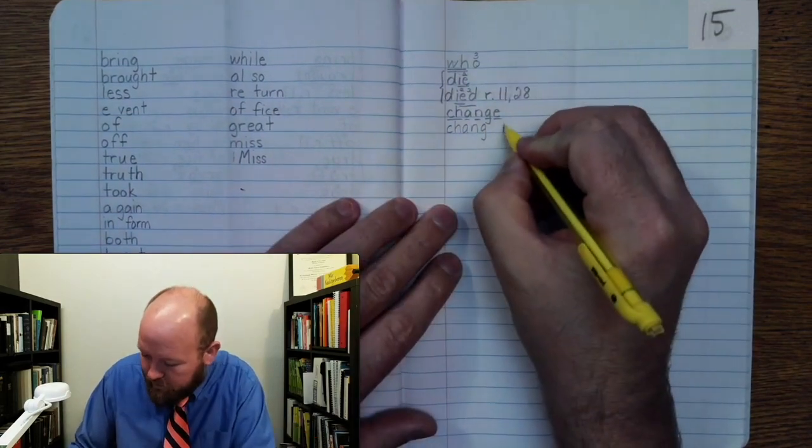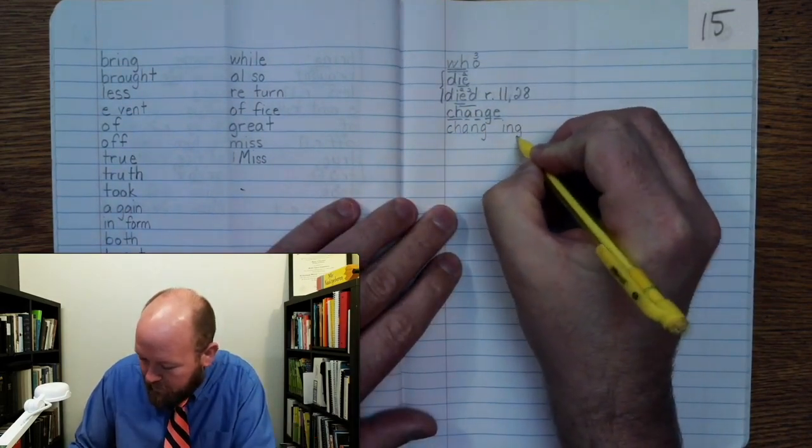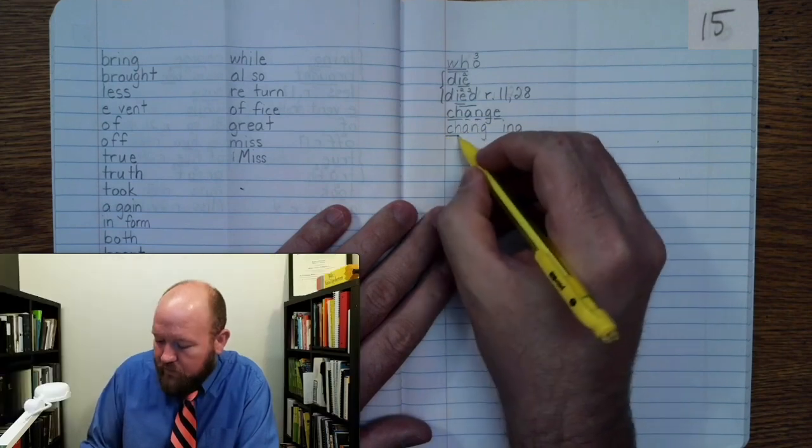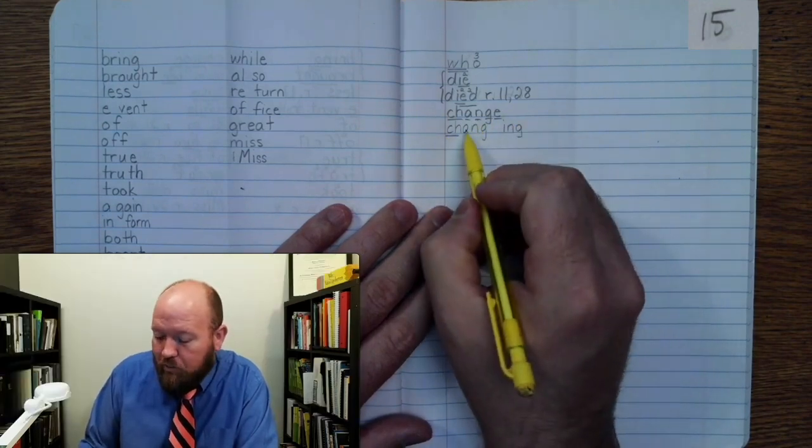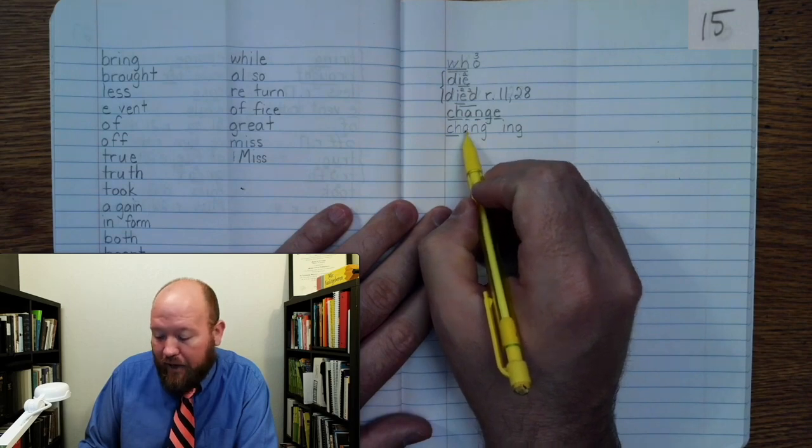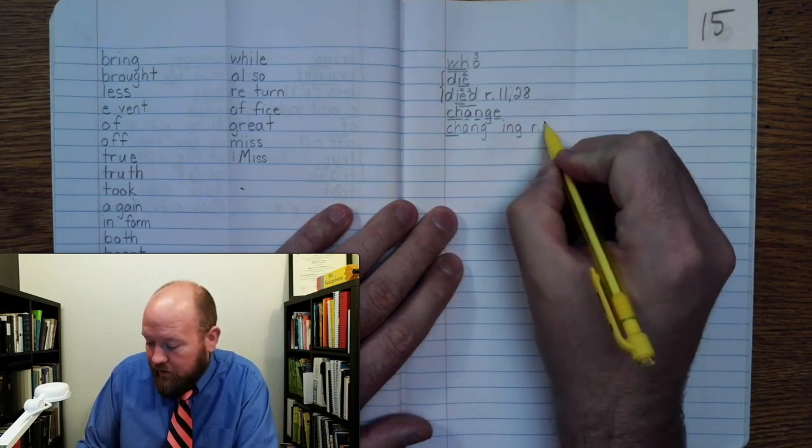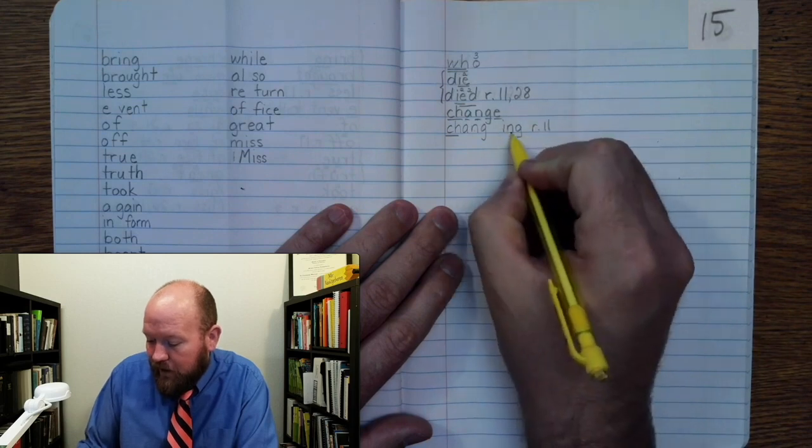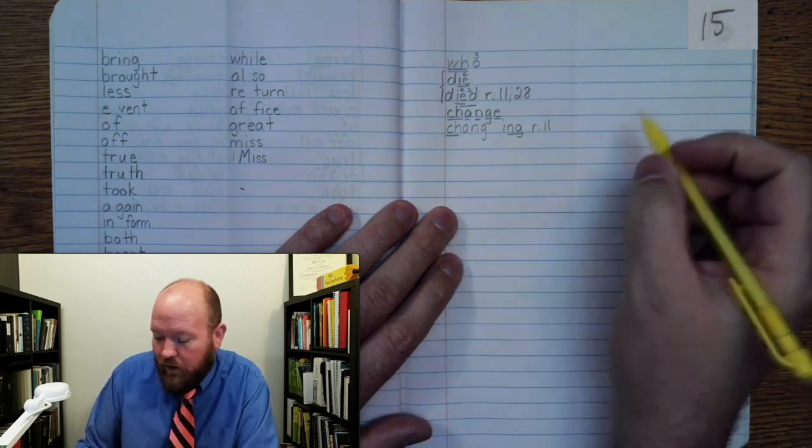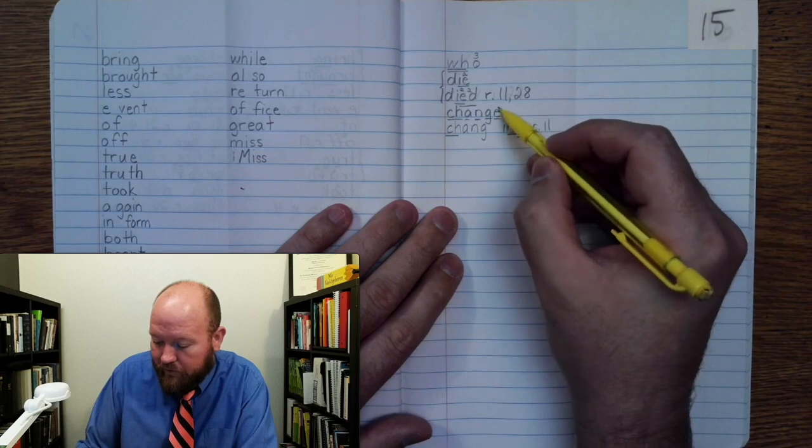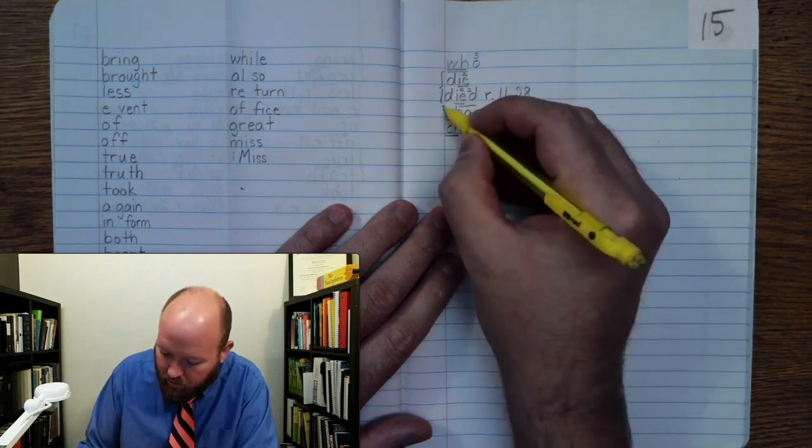Changing. CH once. Now here we don't have the silent final E anymore but it's still going to say A. A, N, J, rule 11. I-NG once. And rule 11 is I had to get rid of that silent final E. Alright, let's go ahead and brace those two.